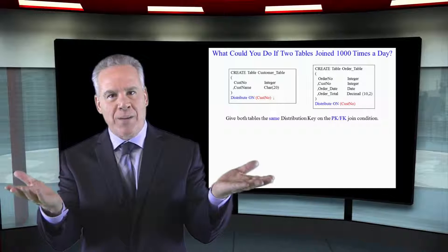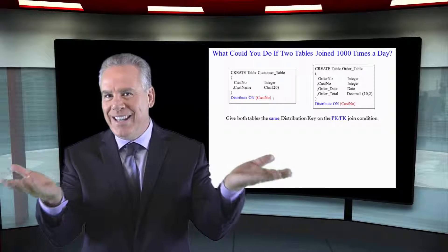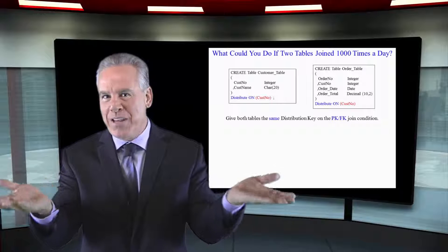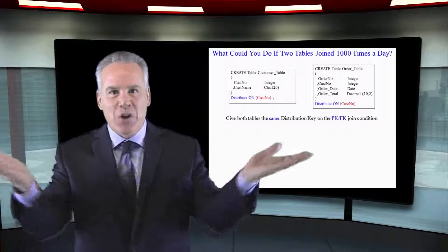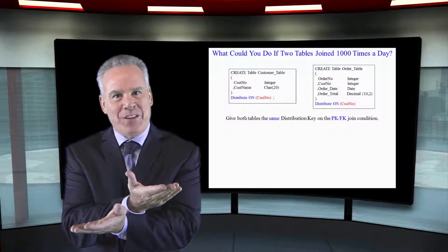We made the joining column the distribution key for both of those tables so there's never any cross-spool movement to make the joins happen.